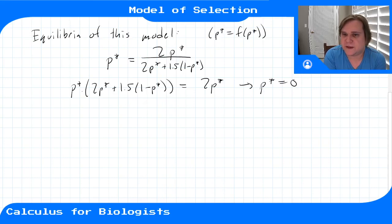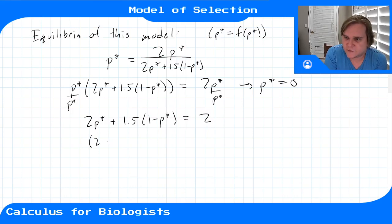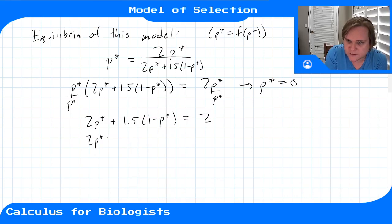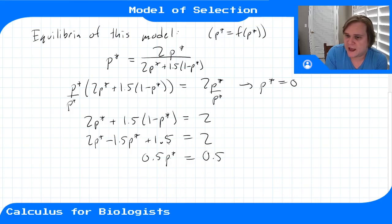So I can divide through by p*, since p* is no longer 0. That gives me 2p* + 1.5(1 - p*) = 2. Doing the algebra: 2 - 1.5p* + ... simplifies to 0.5p* = 0.5, so p* = 1.